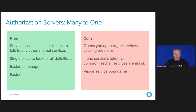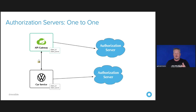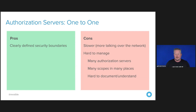One way to mitigate that is a one-to-one pattern where you have authorization servers for each of your microservices. If they need to talk to each other, they need to register before trusting. The pros are cleanly defined security boundaries. The cons are it's a little slower and harder to manage because there are more pieces in place.